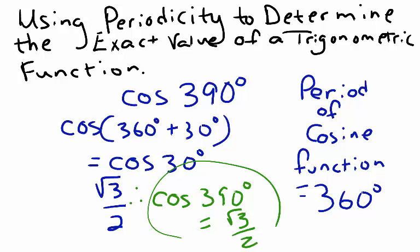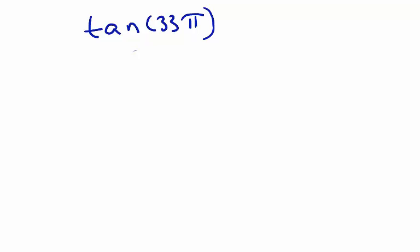Let's take a look at another example. Let's find the exact value of tangent 33 pi. Tangent is periodic with the period of pi.